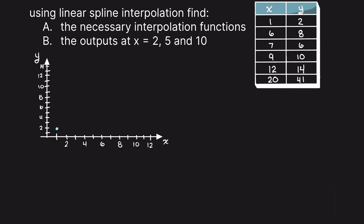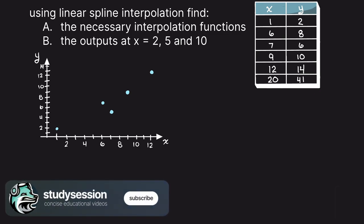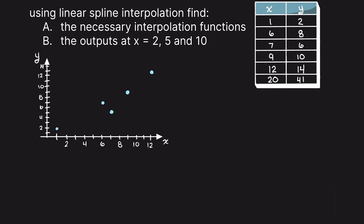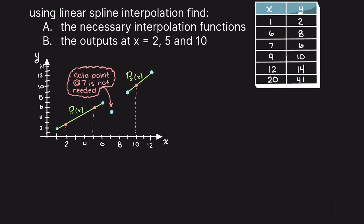Let's begin by plotting our points of interest around the areas in which we need to interpolate. In this example, we do not need to plot the 20 data point, as we already have one data point to the right of our largest point that we will be interpolating for — that is our 12 data point. We can see by this graph that we need two interpolating polynomial functions, and our data point at 7 is actually unnecessary. Spline interpolation does not need to use all the data points supplied to us, whereas methods like divided difference and Lagrange polynomials do.